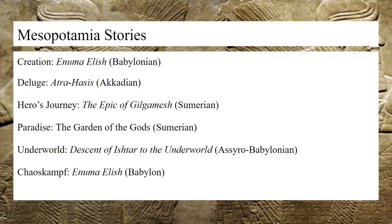We'll start with Mesopotamian mythology. For the creation story, the Enuma Elish is the example we'll look at — the Babylonian epic of creation — which establishes the creation of the universe by the water deities Apsu and Tiamat, Marduk's ascension as the head god of the Pantheon, and the creation of the world of man.